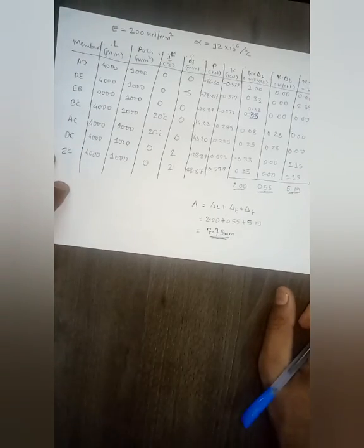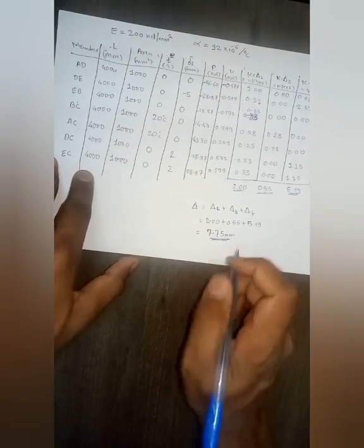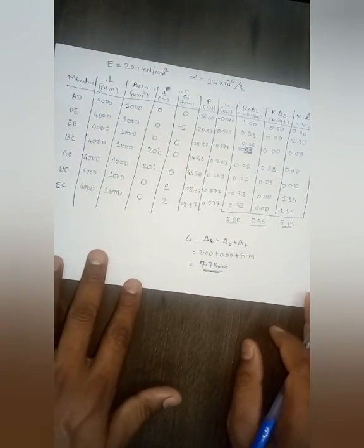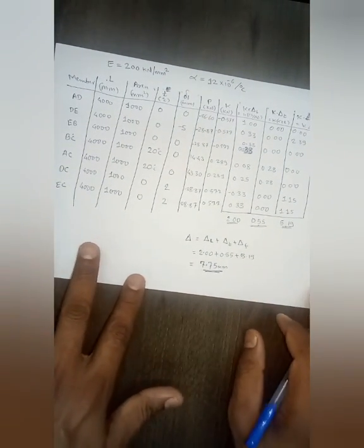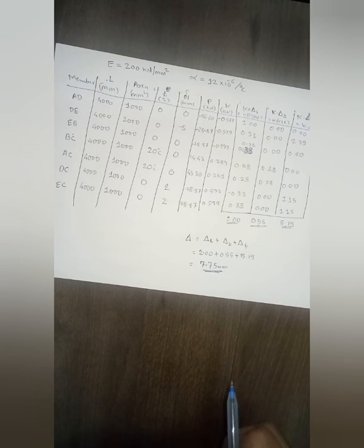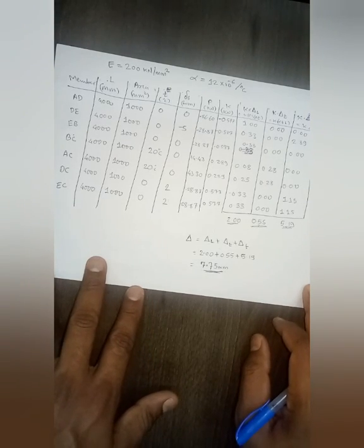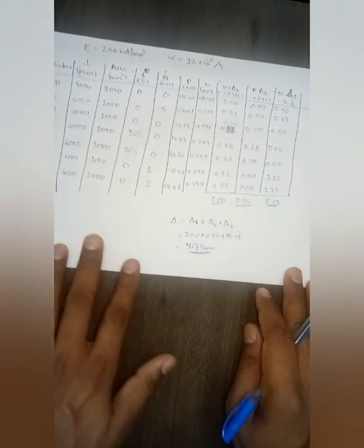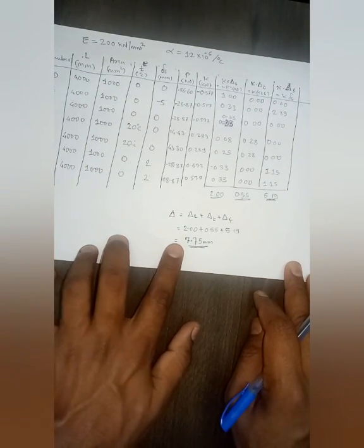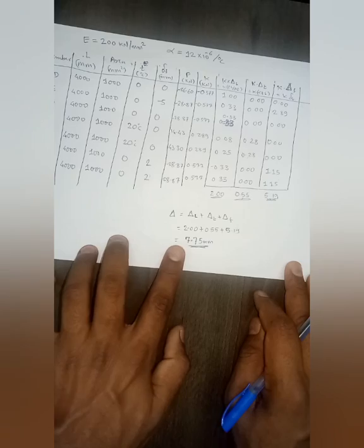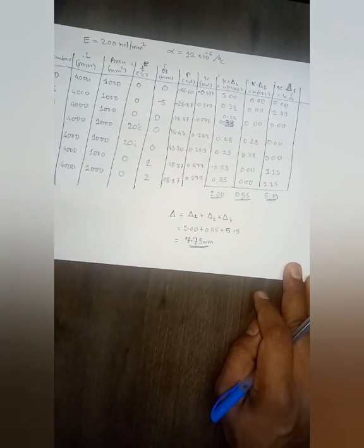This is how you can calculate the effects of lack of fit and temperature change in addition to applied load. This marks the end of the unit load method — this is what you have in your syllabus. There will be one problem related to this that I will post in Google Classroom; please solve it and I will mention the deadline. Thank you.